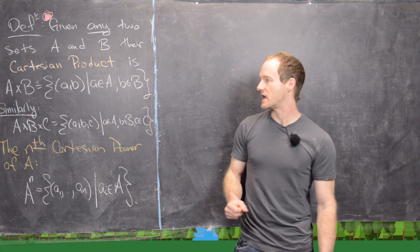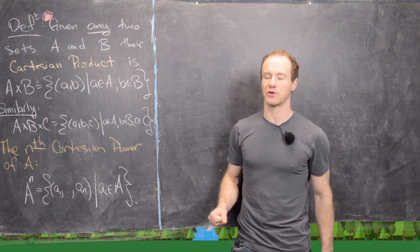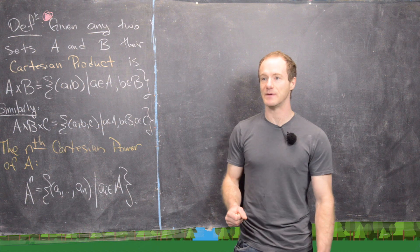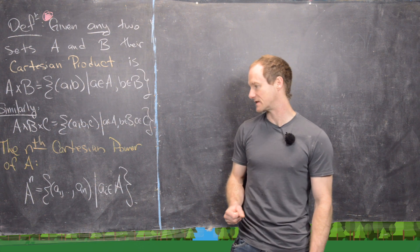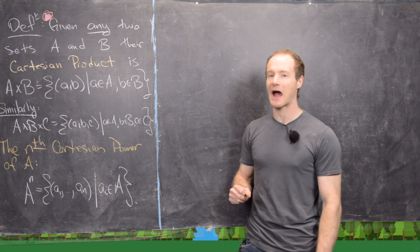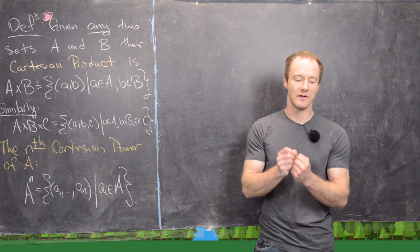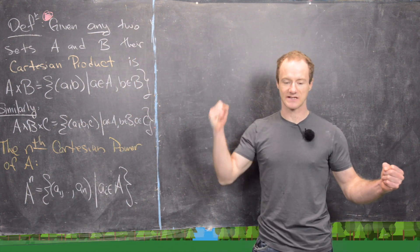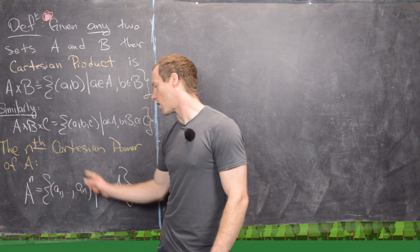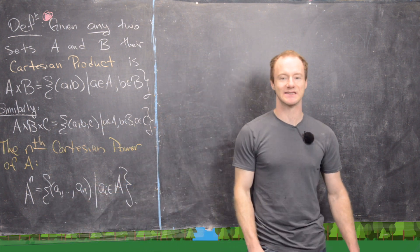A, B, and C — or in general a family of sets in a Cartesian product — do not have to be the same sets; they don't even have to have the same type of elements. We can also define the nth Cartesian power of A, written A to the n, as A cross A cross A... n times, made up of all ordered n-tuples (a₁, ..., aₙ) where each aᵢ is in A.